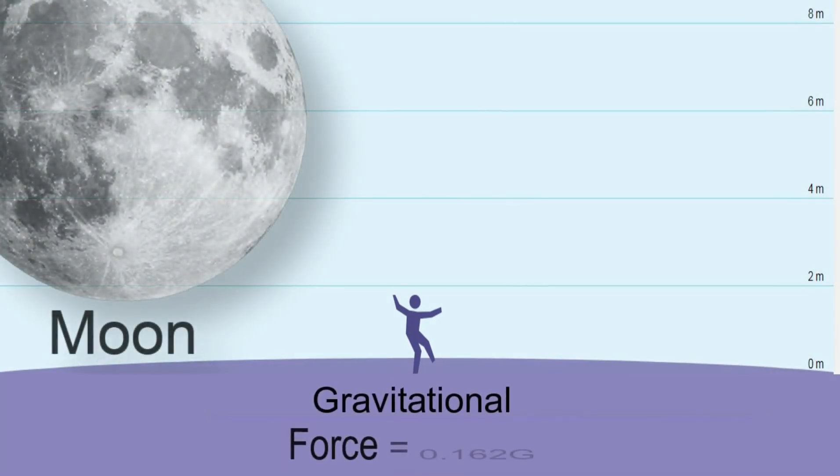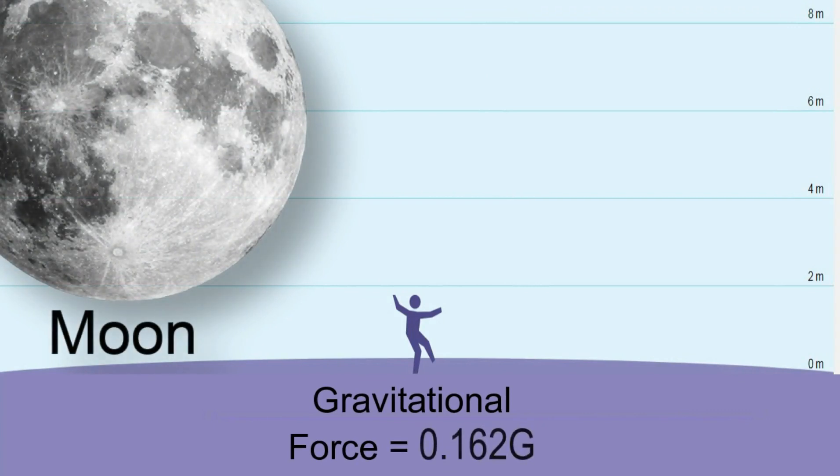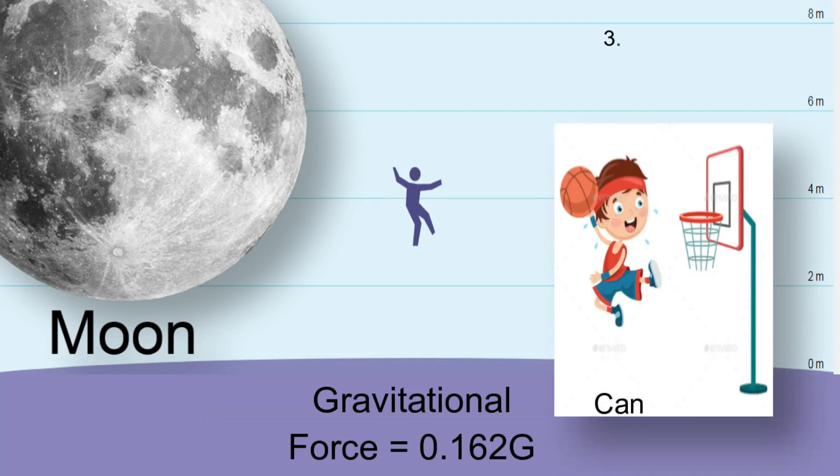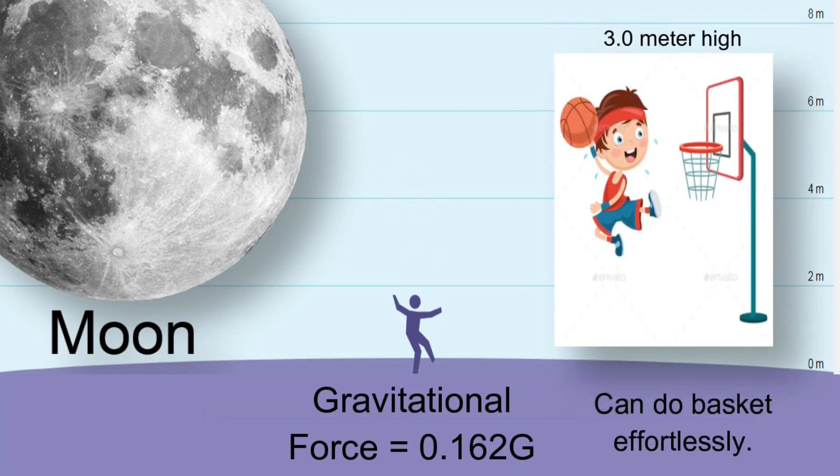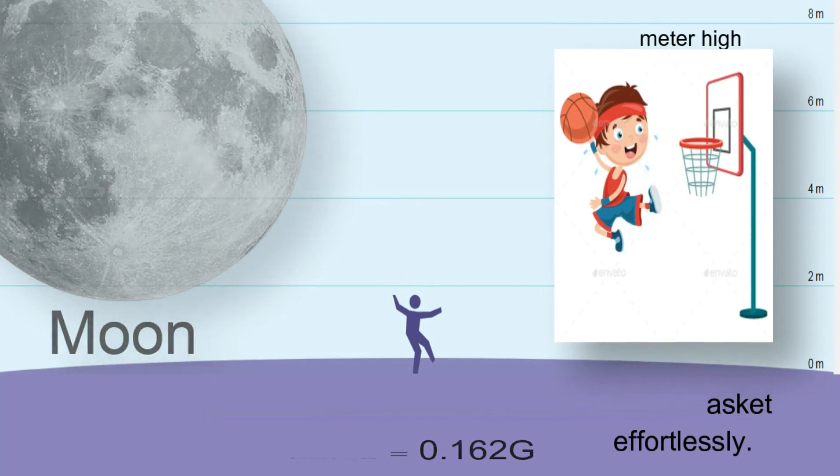The Moon: The gravitational force on the Moon is one-sixth of the Earth. You will love jumping on the Moon as you can jump six times higher than on the Earth. You can reach a basketball hoop effortlessly and can beat any basketball legend.